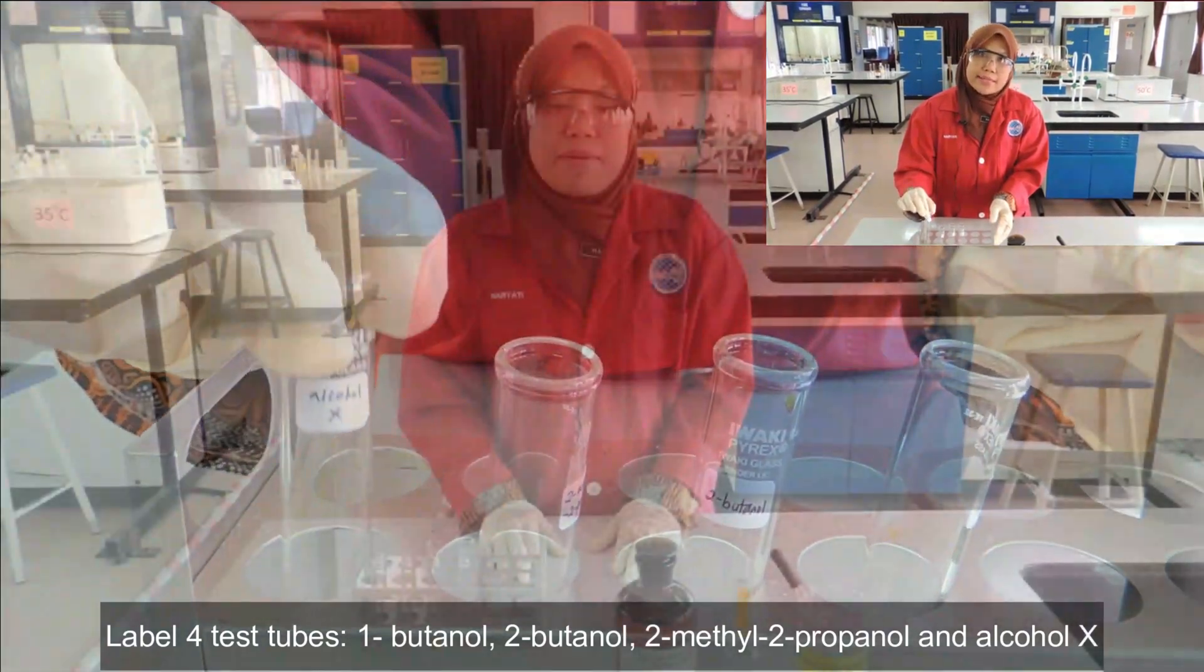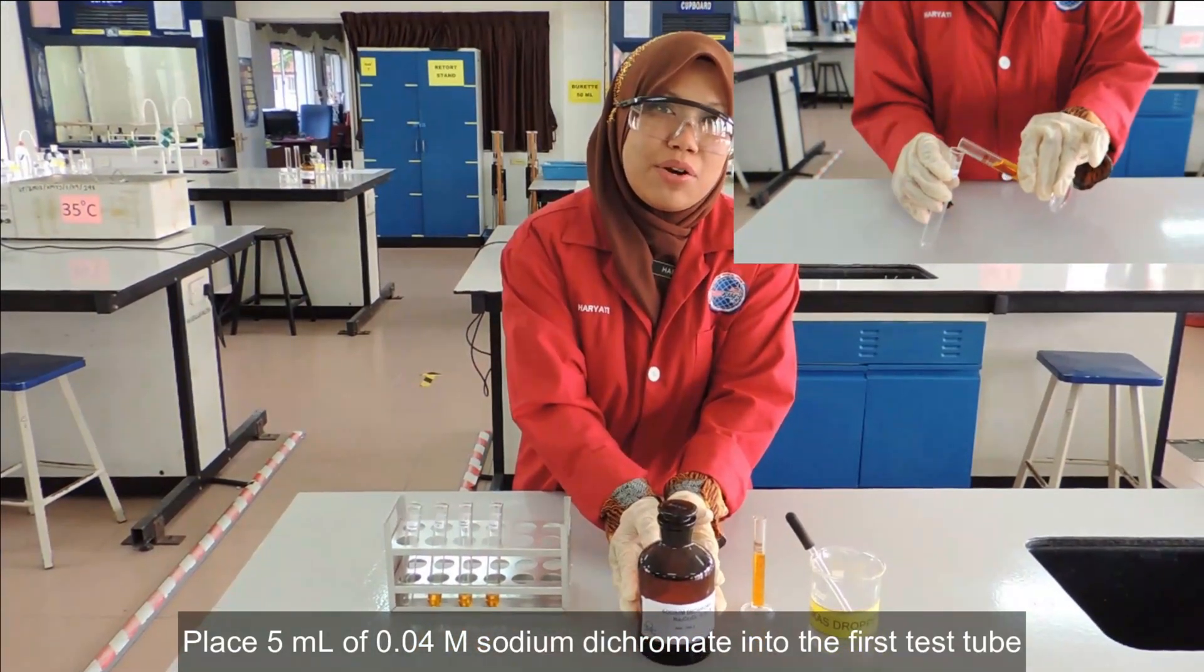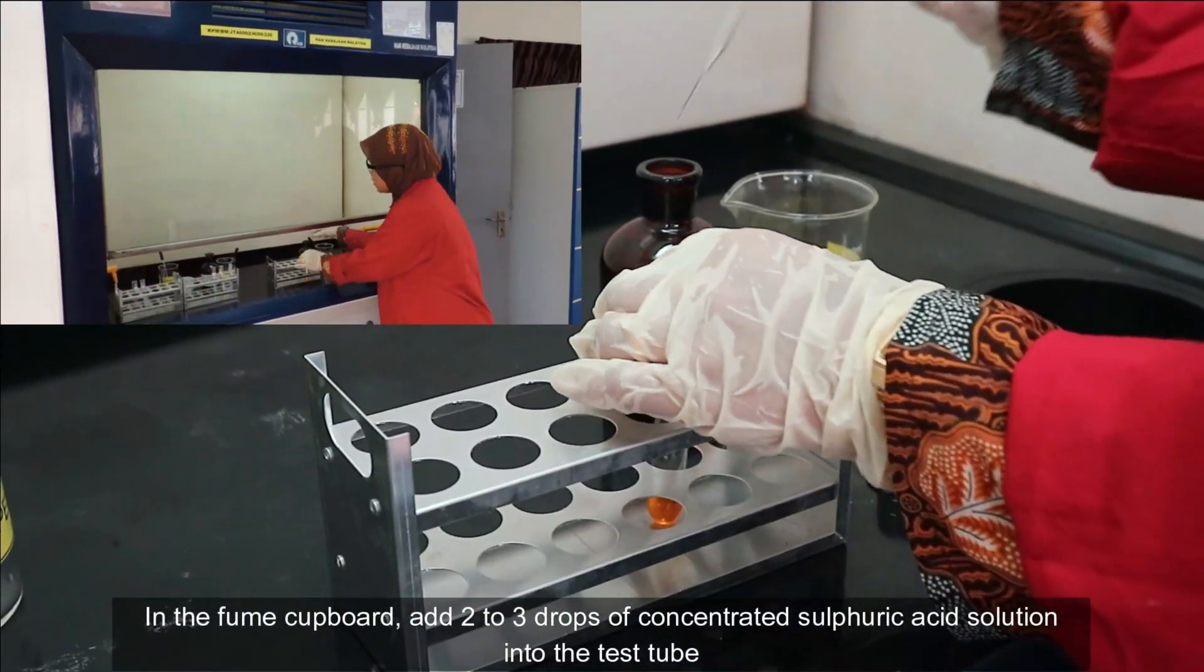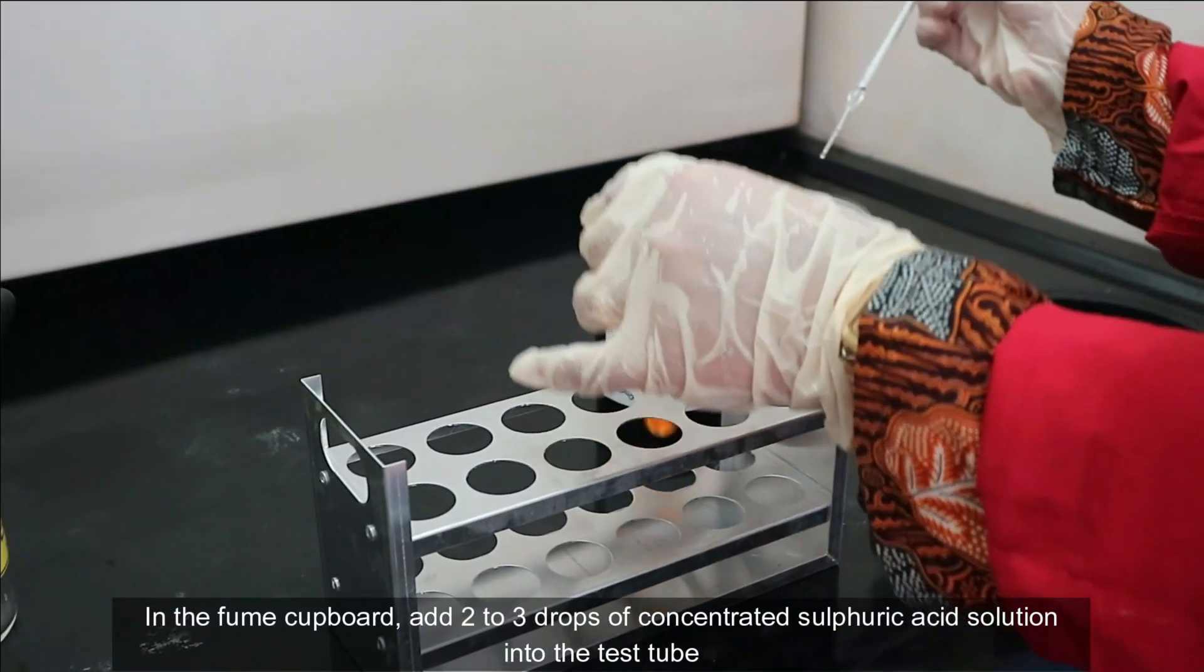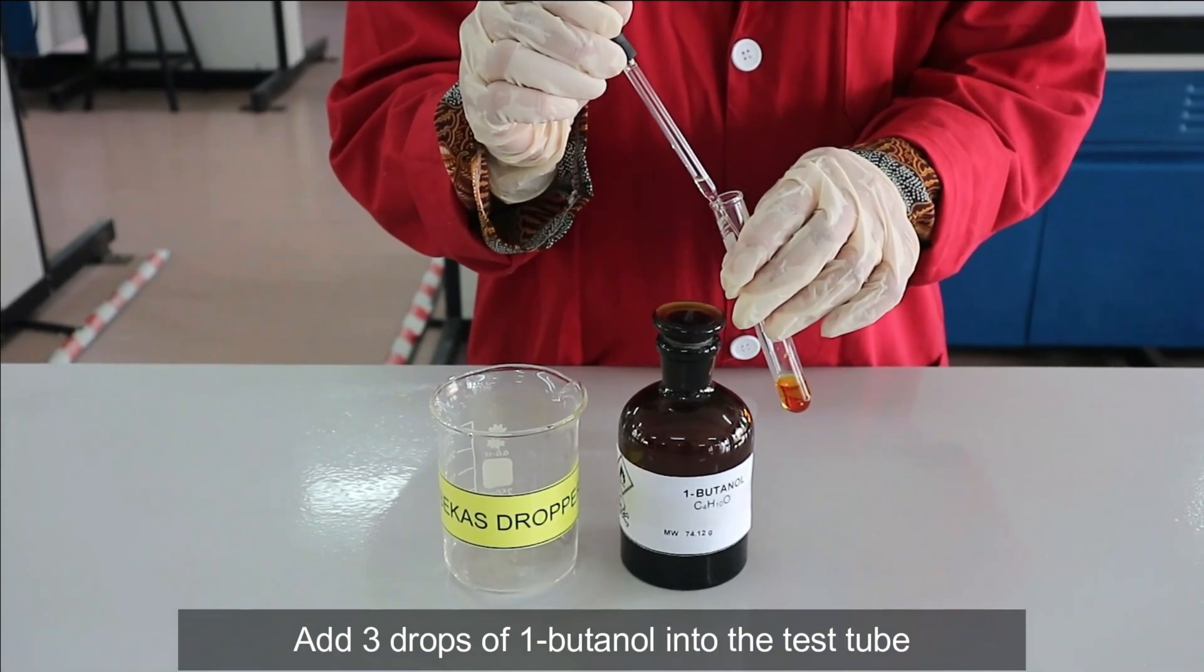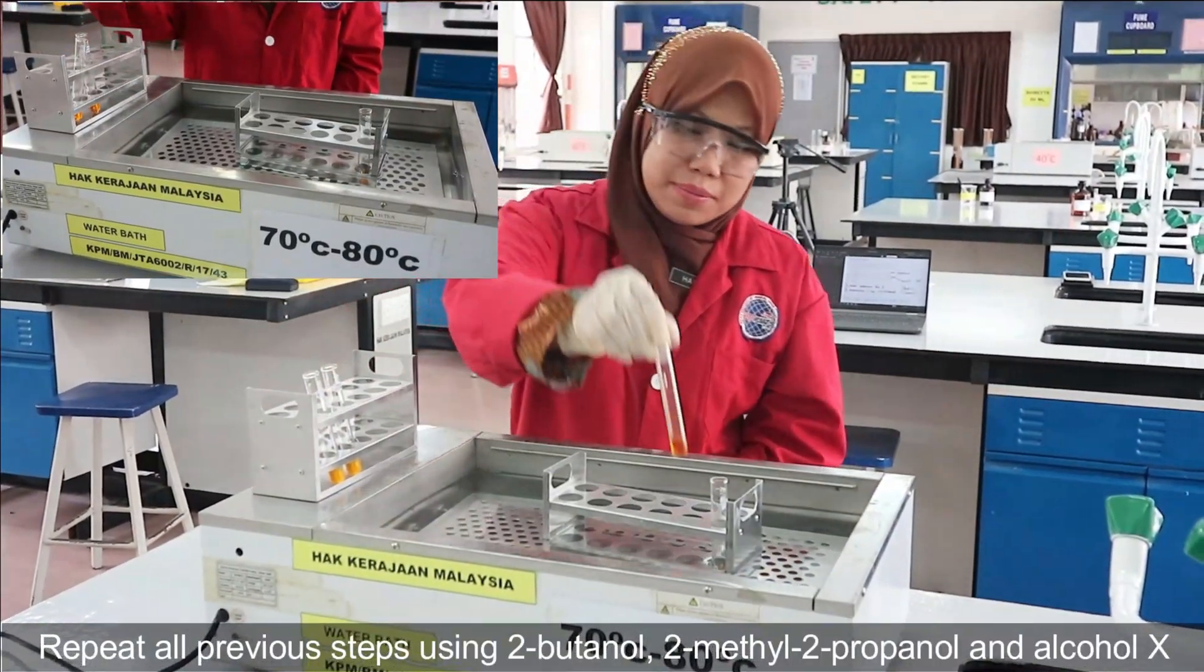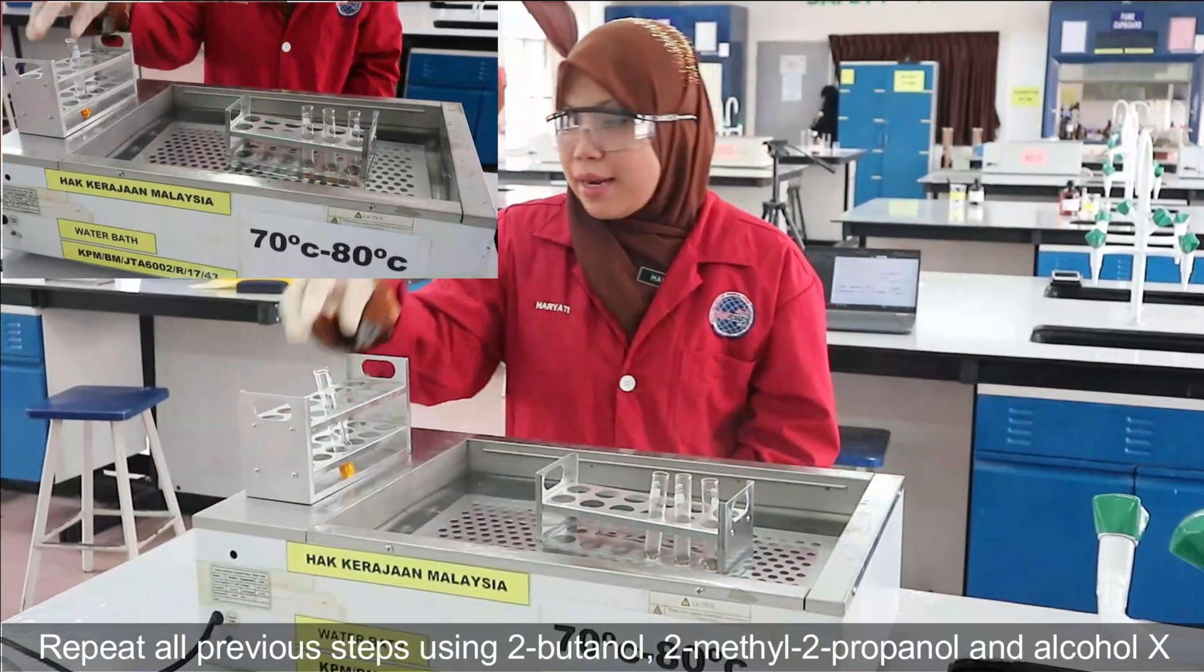First, place 5 ml of 0.04 molar sodium dichromate into the first test tube. In the fume cupboard, add 2 to 3 drops of concentrated sulphuric acid solution into the test tube. Add 3 drops of 1-butanol into the test tube. Heat the test tube in the water bath. Repeat all previous steps using 2-butanol, 2-methyl-2-propanol, and alcohol X.